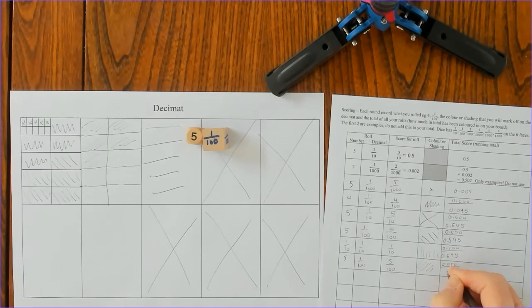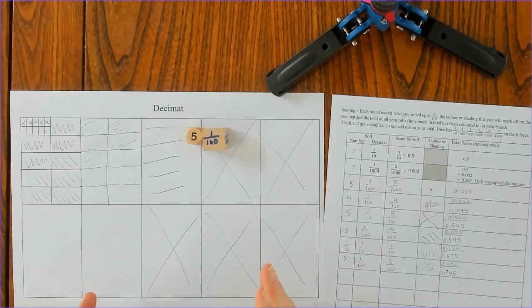The game continues until someone fills their board completely with no extras, so it has to be a complete one. Other variations that I've heard is that you start with one and you subtract.